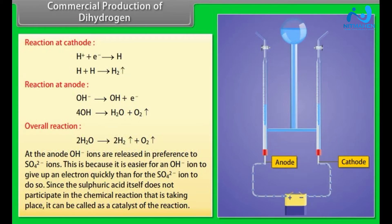At the anode, OH minus ions are released in preference to SO4 2 minus ions. This is because it is easier for an OH minus ion to give up an electron quickly than for the SO4 2 minus ion to do so. Since the sulphuric acid itself does not participate in the chemical reaction that is taking place, it can be called as a catalyst of the reaction.